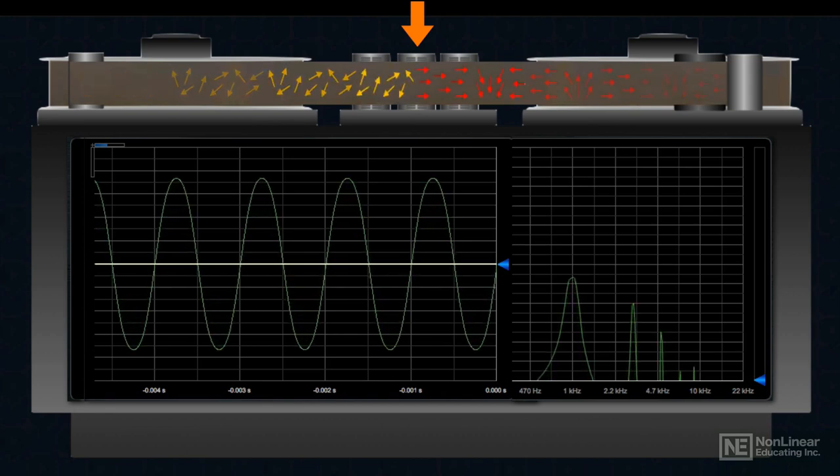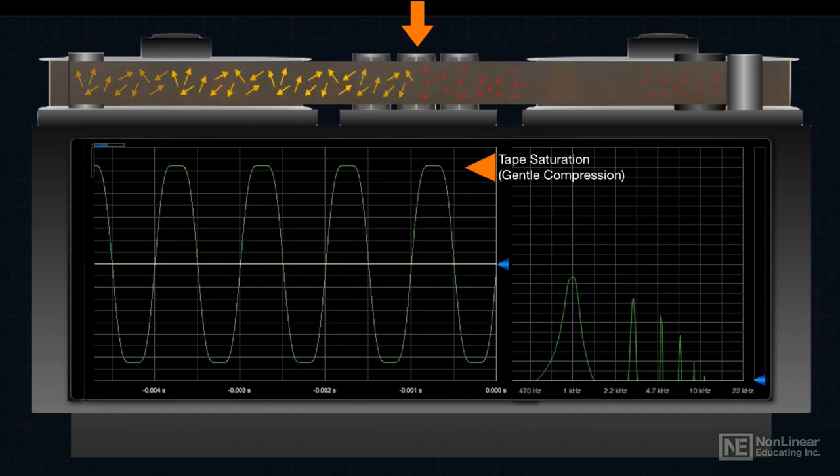When all the domains are magnetized, the tape is saturated. Higher incoming signal levels will not be reflected in the recording signal, gently clipping or distorting it at higher audio levels.